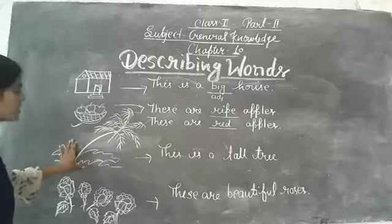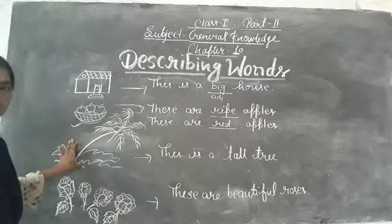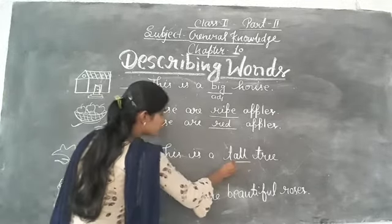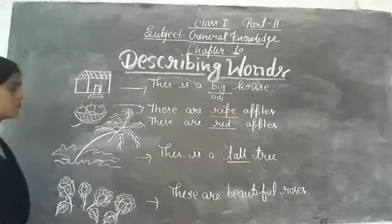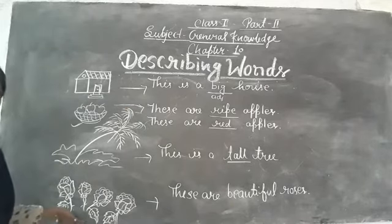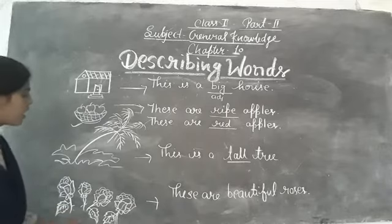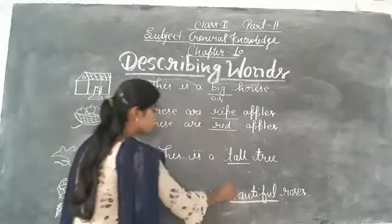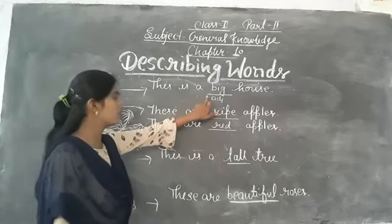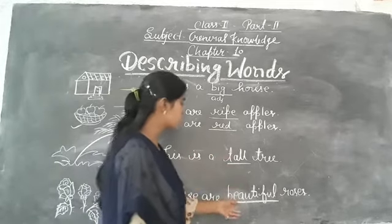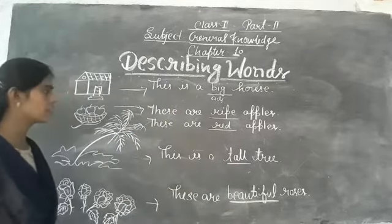What is this? This is a tree. But how is this tree? This is a tall tree. What is this? These are roses. But how are these roses? These are beautiful roses. So 'big,' 'ripe,' 'tall,' and 'beautiful' are adjectives in these sentences.